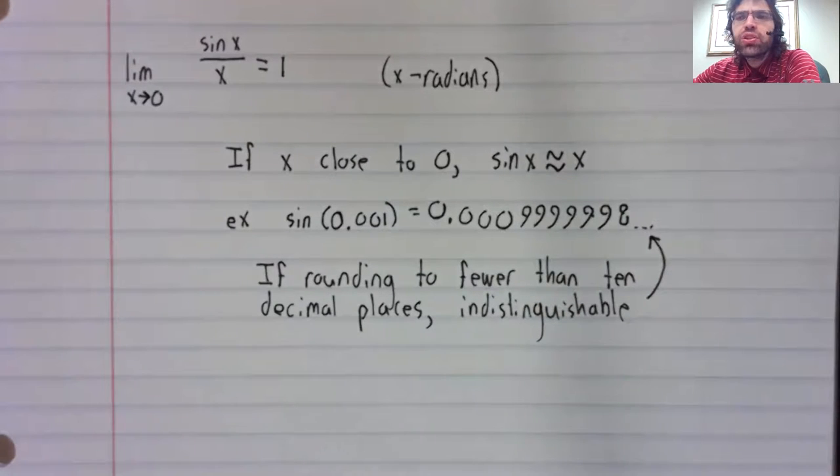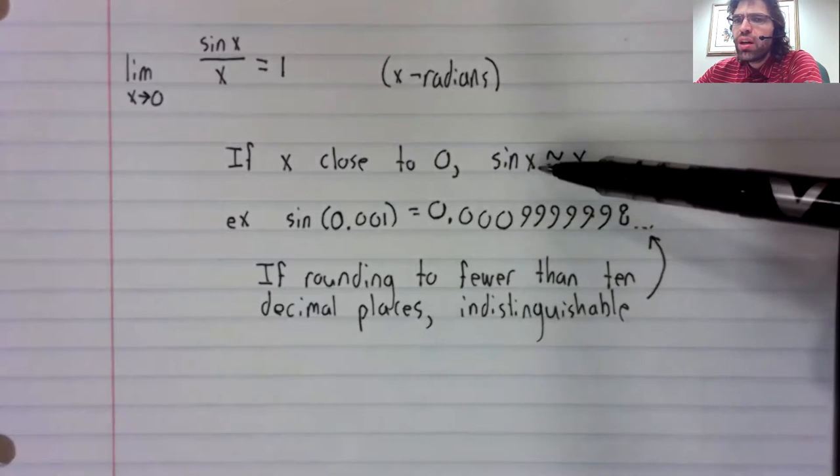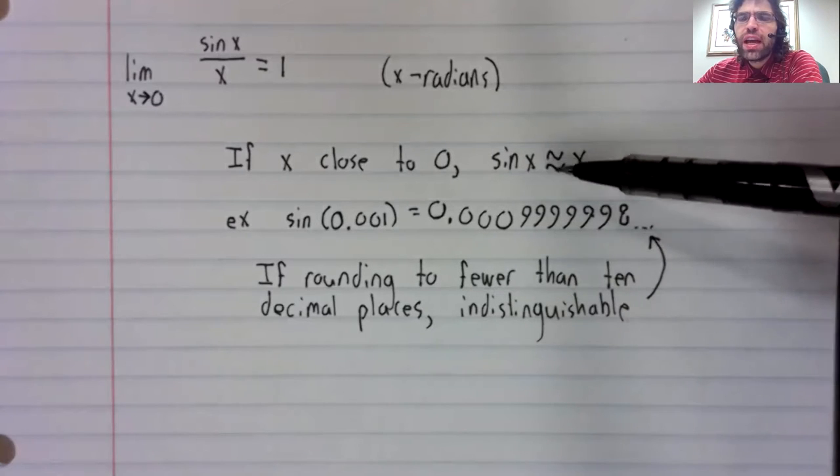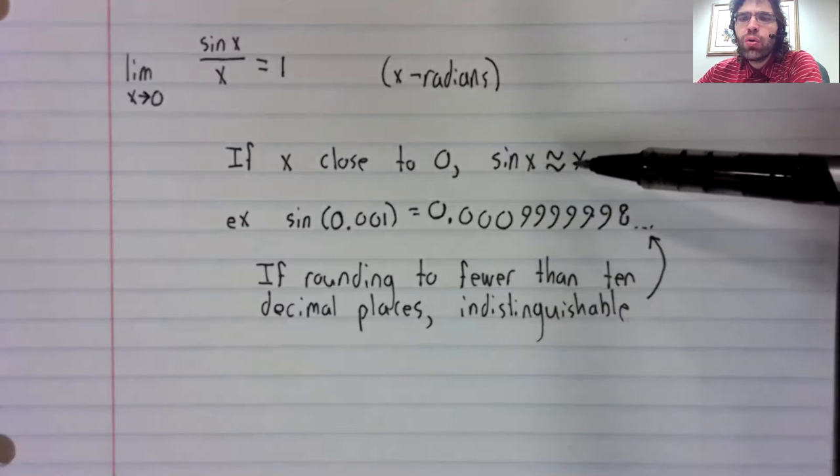You're in some applied setting, say astronomy or optics, where you're working with very small angles. And you're using trigonometry, and you're taking the sine of a very small angle. And you say, well, because of this, the sine of the angle and the angle are indistinguishable.